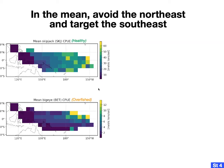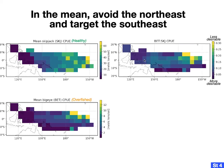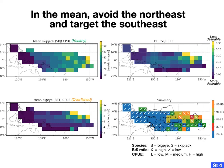I computed maps of the mean annual FAD-associated skipjack and bigeye catch per unit effort, or CPUE — simply the average amount of species caught per time you set out a net on a FAD. From these two maps, I computed the ratio of bigeye to skipjack tuna caught, shown in a third map. The higher this ratio, the greater the fraction of total catch made up of bigeye rather than skipjack — so we want to avoid that. I then tried to combine all three maps into one summary map showing which areas to target and which to avoid.